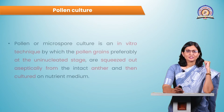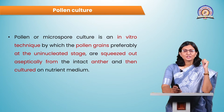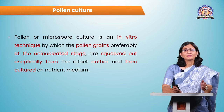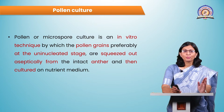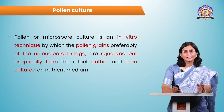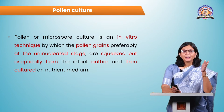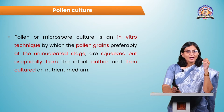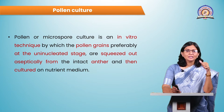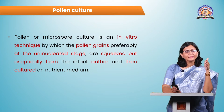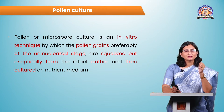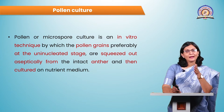Pollen culture is also called microspore culture. It involves culturing of pollen in in vitro conditions. Preferably, pollen grains are selected at the uninucleated stage and are squeezed out aseptically from the intact anther, then cultured on nutrient media supplemented with the appropriate concentration of phytohormones — auxin and cytokinin.